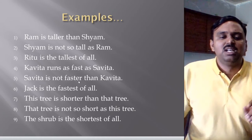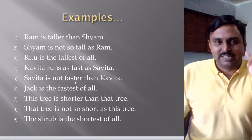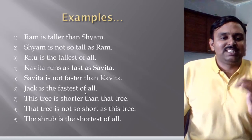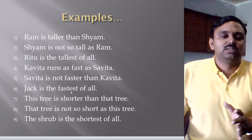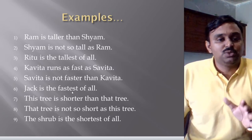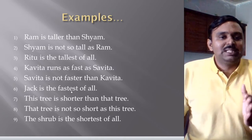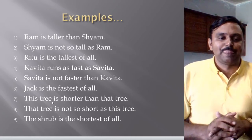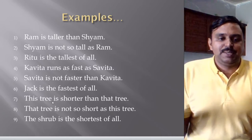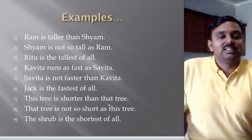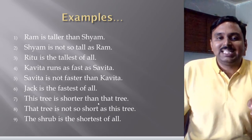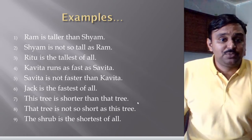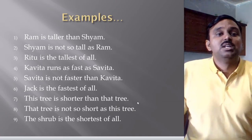So 'Savita is not faster than Kavita' — 'faster' is the adverb second form and 'than' is used, making it comparative degree. Number six: 'Jack is the fastest of all' — 'the' is used and the adjective third form is used, so this is superlative degree. Number seven: 'This tree is shorter than that tree' — comparison between two trees, 'shorter than' is adjective second form with 'than,' so this is comparative degree.